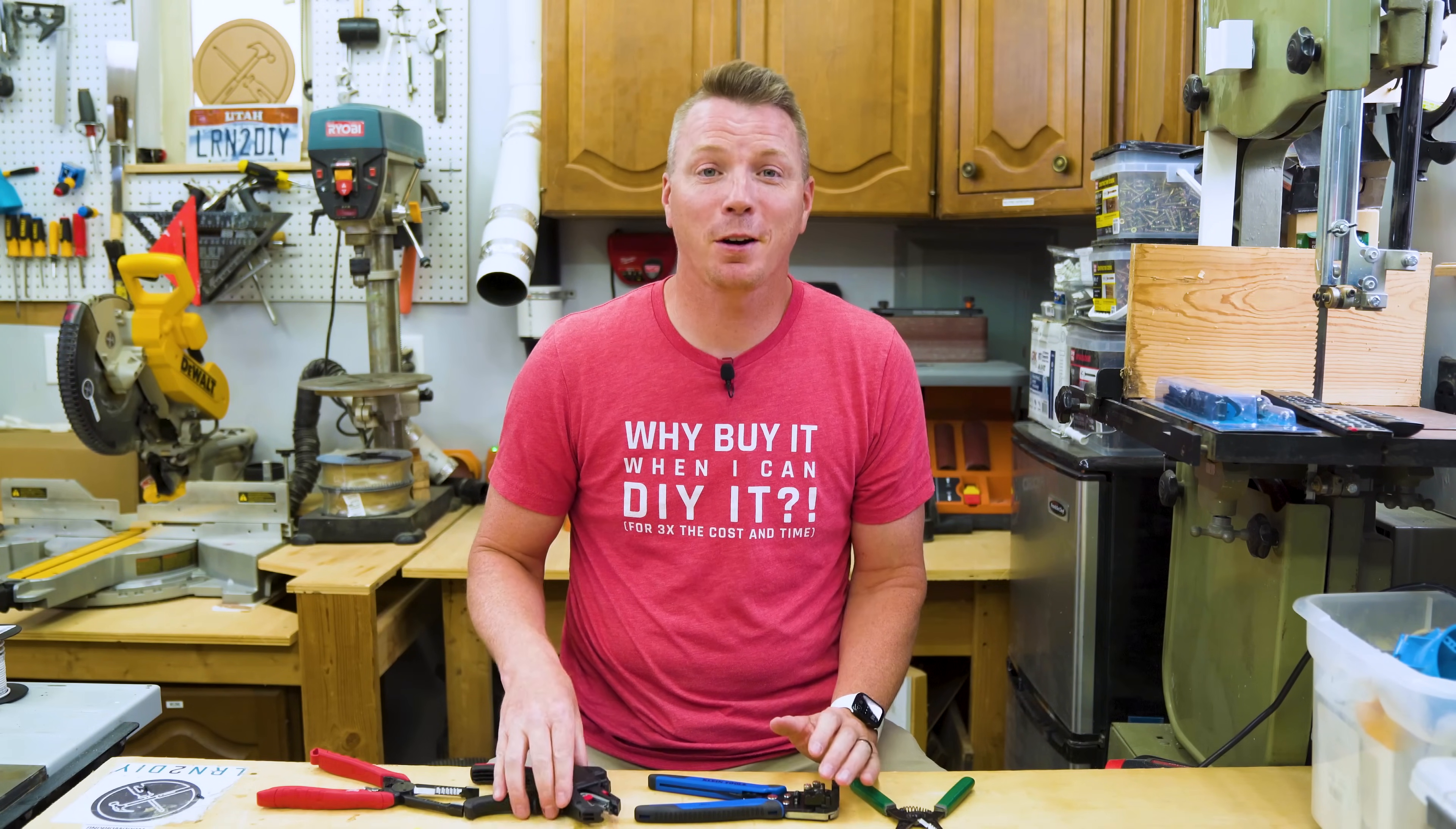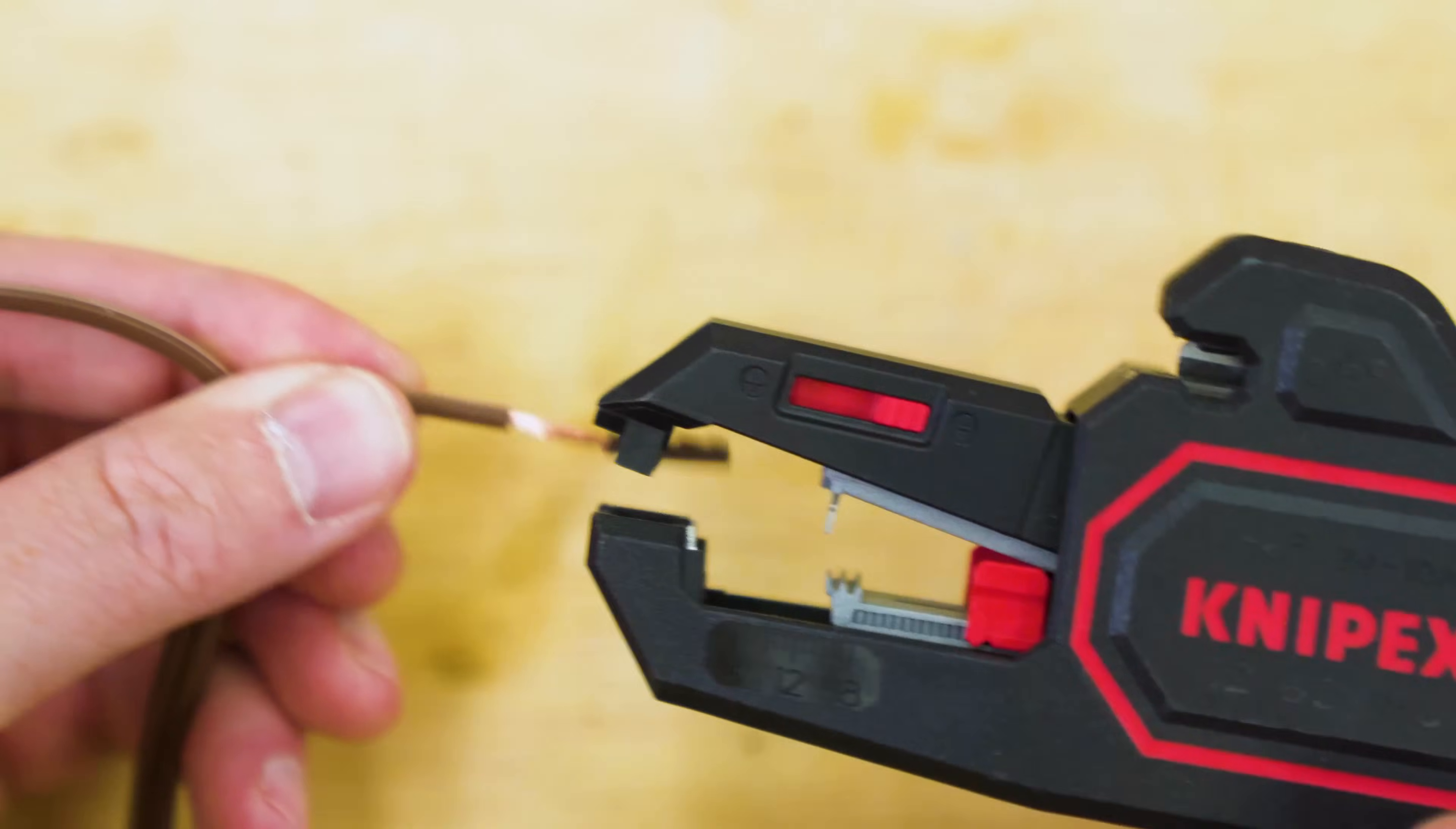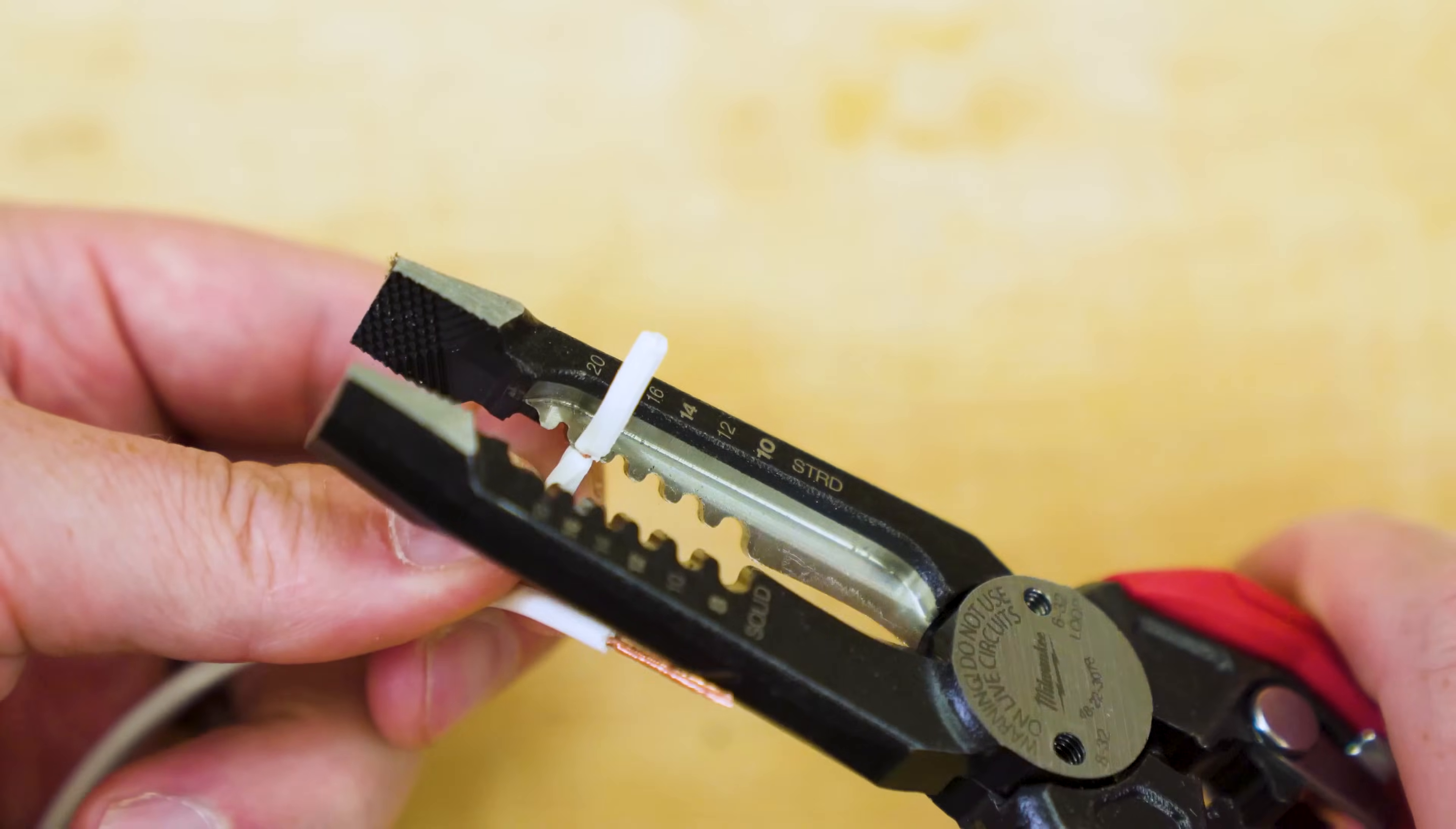Personally, my favorite are these universal Knipex wire strippers that just use one squeeze and it's good to go. They do a great job every single time. They cost a little more, but if you're doing a lot of this, something like this can save you tons of time. And then of course the six-in-ones that I mentioned before also have traditional wire strippers for both solid and stranded built right in. Now that our wires are clipped, separated and stripped, we're ready to join them together.